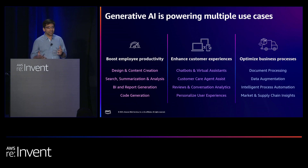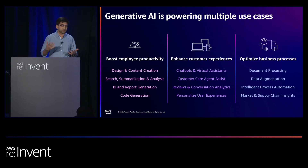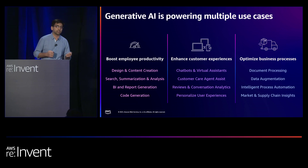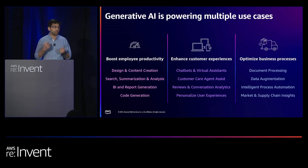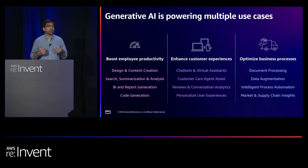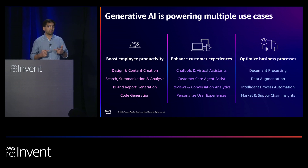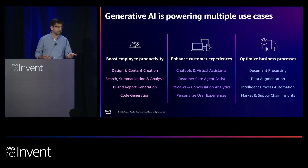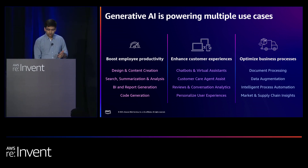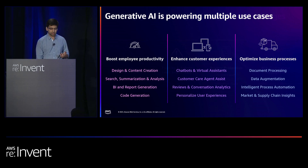Another common use case is RAG — Retrieval Augmented Generation — around document search, document summarization, or questions and answers. Beyond that, there are numerous use cases around code generation, process automation, contact center agent assistance, and so on. How do you go about powering these use cases, and what are the different challenges that we face with them?